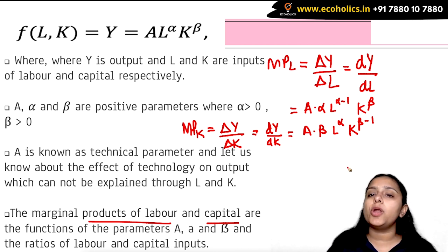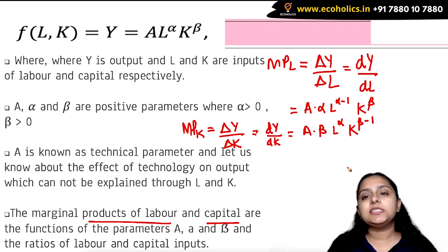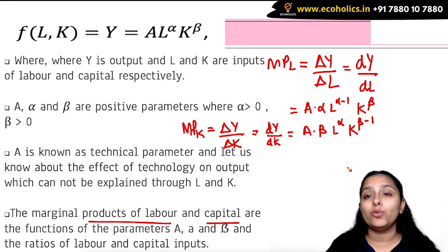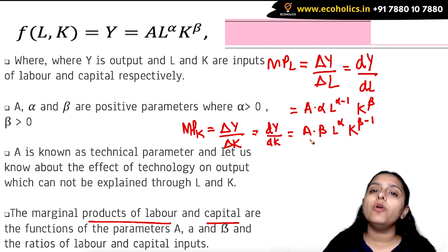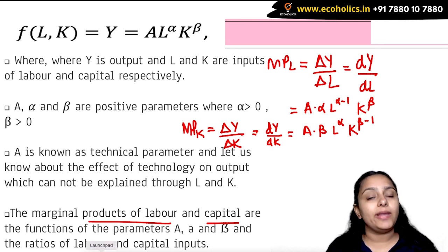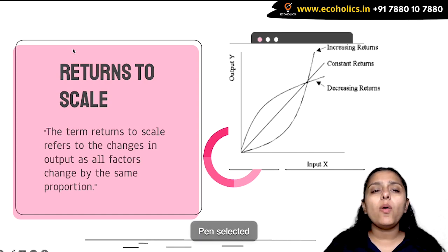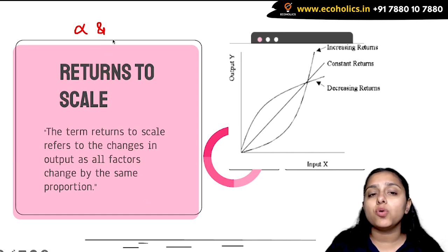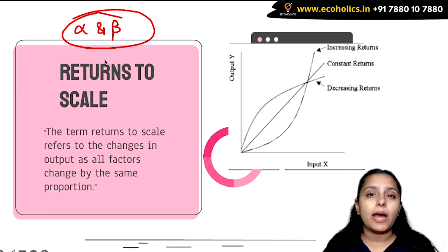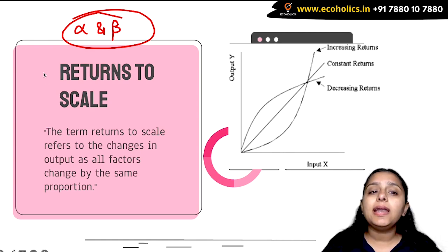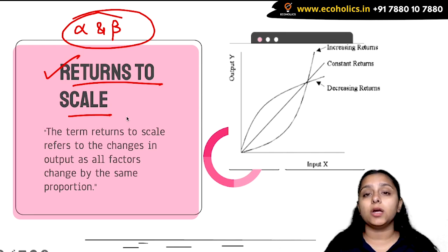What we have seen is that the marginal productivity of either labor or capital is dependent on both L and K. We can also express these in terms of capital-labor ratios with further mathematical reasoning. Now, alpha and beta are not just elasticities of output with respect to labor and capital — they hold more importance than that. They let us know about returns to scale in a Cobb-Douglas production function.